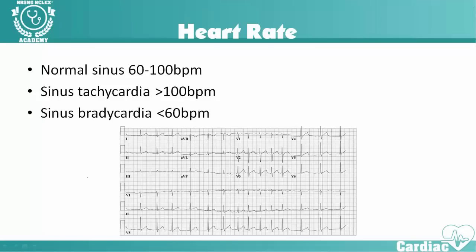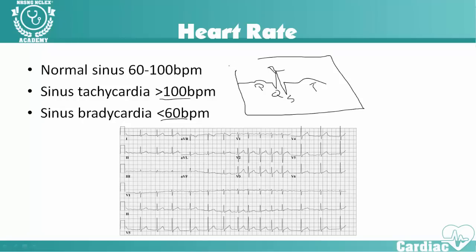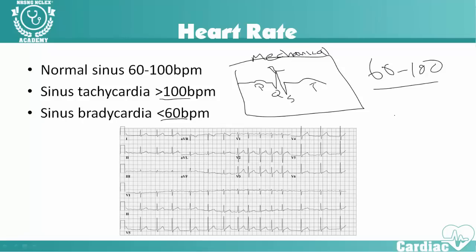First of all, heart rate. Normal heart rate is 60 to 100. Sinus tachycardia is going to be over 100 beats per minute and sinus bradycardia is going to be less than 60 beats per minute. We assess that through our EKG — we're going to have our P, Q, R, S, and T. This is one complete cardiac cycle, and we're hoping our patients are between 60 to 100 beats per minute.